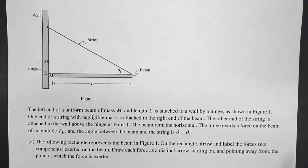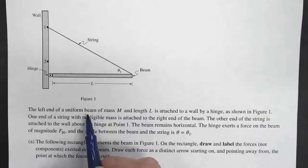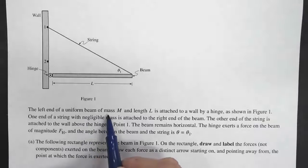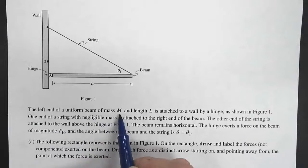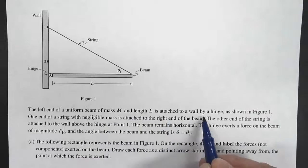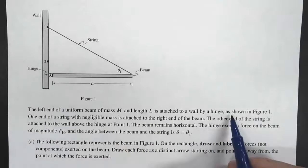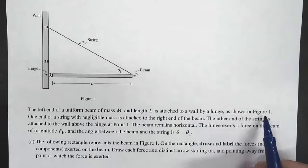In this video, we're going to work through this rotational motion free-response question. The left end of a uniform beam of mass M and length L is attached to a wall by a hinge, as shown in figure 1.